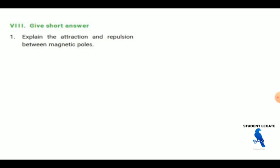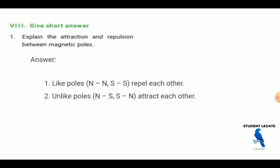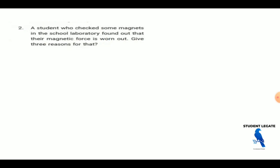Explain the attraction and the repulsion between magnetic poles. Like poles: north south, south south. Unlike forces are: north south, north south south, north side, do not attract.